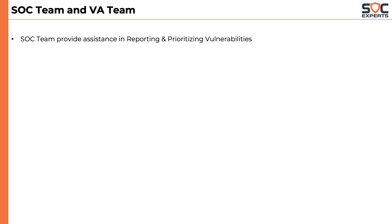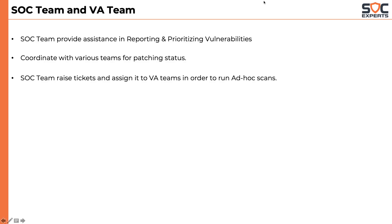Let's end this module by understanding how SOC teams work with vulnerability assessment teams. Most companies have a very small vulnerability assessment team — often just one person. The SOC team provides assistance in reporting and prioritizing vulnerabilities identified in the scan. The SOC team also coordinates between various teams for patching statuses. When a security analyst identifies suspicious behavior on a machine, they may raise a ticket and assign it to the VA team to perform an ad hoc scan on the system in question.